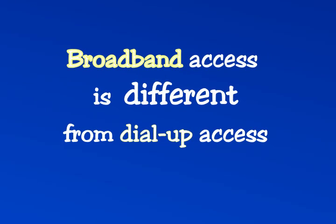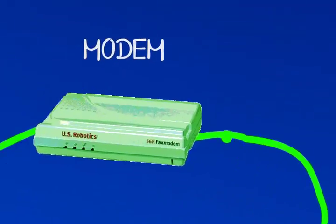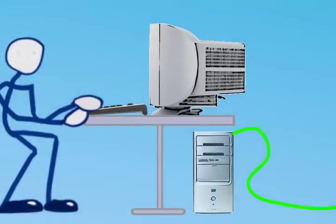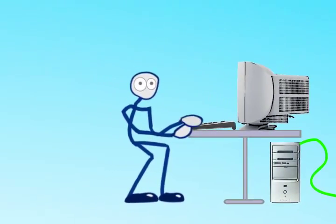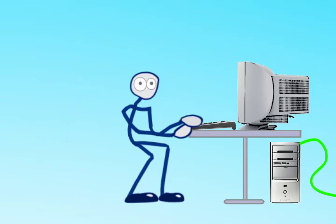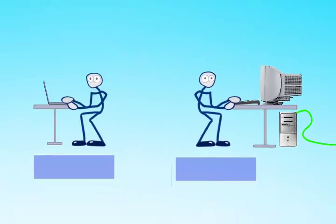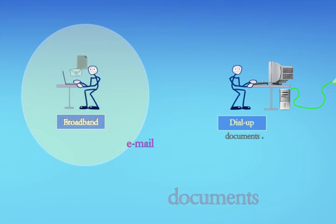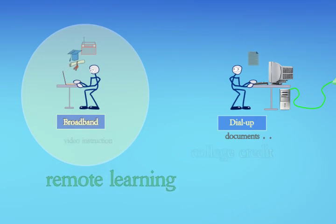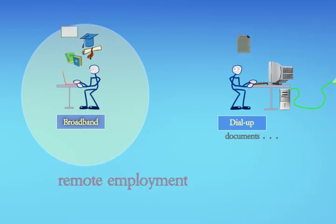Broadband access is different from dial-up access. To connect using dial-up, your computer makes a call on your phone line to connect you to your internet service provider. The dial-up internet connection is good for only as long as the call lasts. Broadband connections, however, are typically on all the time and are much faster than dial-up. Many of today's internet activities and opportunities require a broadband connection.